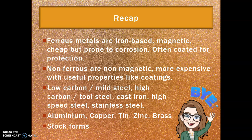Here's our recap: ferrous metals are iron-based, magnetic, cheap but prone to corrosion, and often coated for protection. Non-ferrous metals are non-magnetic, more expensive, but have useful properties like corrosion resistance and aesthetic appeal. Our ferrous metals were low carbon or mild steel, high carbon or tool steel, cast iron, high speed steel, and stainless steel. Our non-ferrous metals were aluminium, copper, tin, zinc, and brass. We also talked about stock forms. Well done — lots covered today, see you next time.